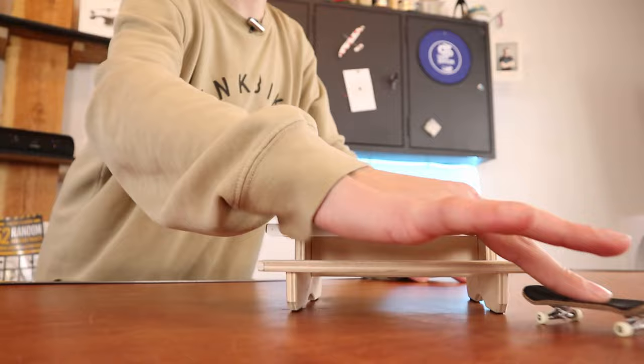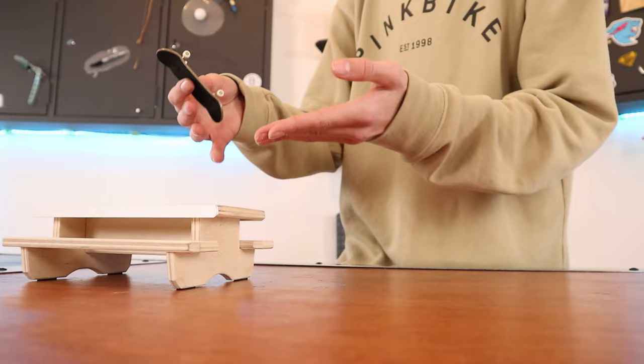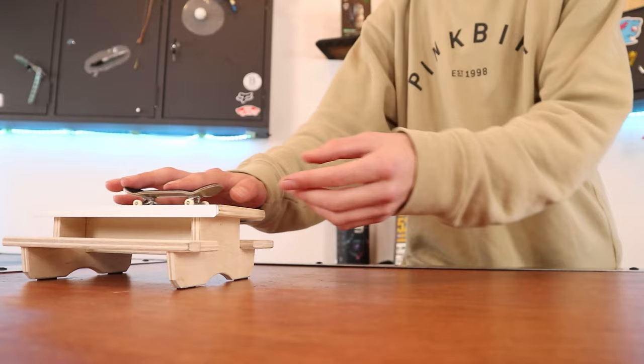The final tip for doing a kickflip is do it off of some sort of ledge. It can be a book, it can be a box, it doesn't matter. But when you pop the board, you're instantly this high off the ground, making you have more time to do the kickflip.